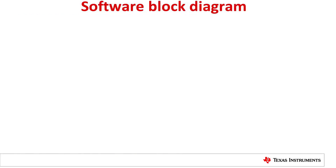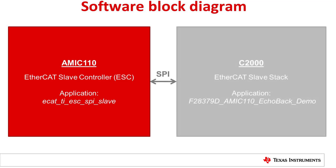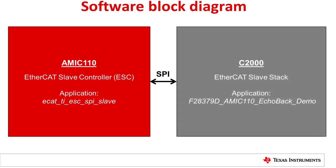We will build and load two projects for this demonstration. The AMIC 110 will run the EtherCAT Slave Controller or ESC, and the C2000 will run the Echo Back application which also contains the EtherCAT Slave stack. Now let's proceed to the demonstration.